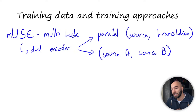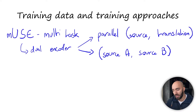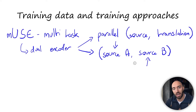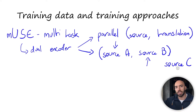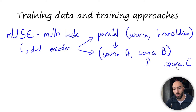This approach also needs hard negatives in the training data to perform well. A hard negative means that alongside a source sentence A and a similar sentence B, you also need a source C that uses similar words to A but actually means something different - so it's harder for the model to differentiate between them. This makes the training task harder, which of course makes the model better.